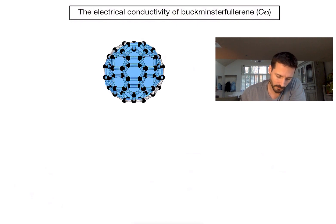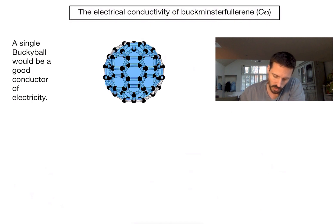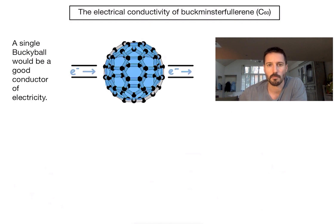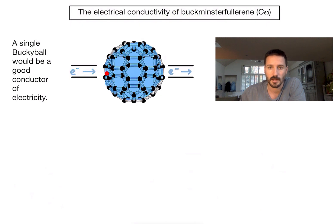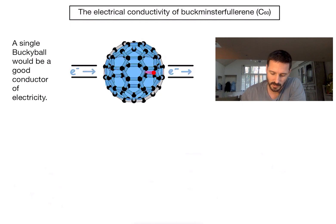So technically speaking, if I was to take one bucky ball I would find that it would be a good conductor of electricity. Why is that? Well, if I try and pass electrons through my structure from left to right, that electron can jump onto my delocalised network of electrons and push another delocalised electron off the other side. So by passing electricity through it, because of those delocalised electrons, I can see a continual flow of electrons across the structure, meaning it's a good electrical conductor.